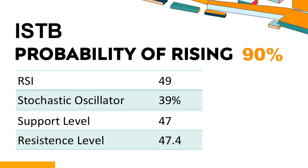This means that the security's price has been falling but has not yet reached oversold levels, typically considered an RSI reading of 25 or lower. The current stochastic oscillator of ISTB is 39%, indicating that the stock is experiencing a strong downtrend and strong selling pressure.